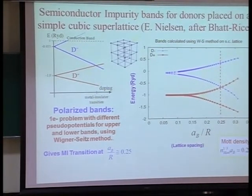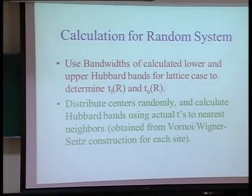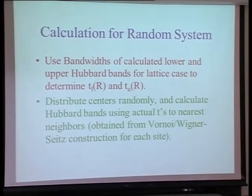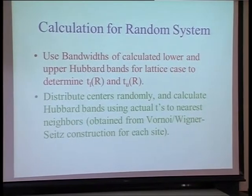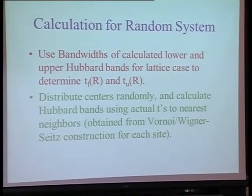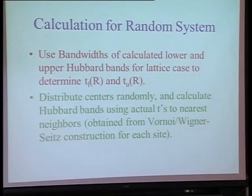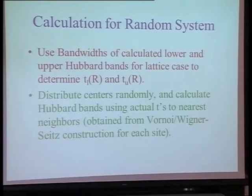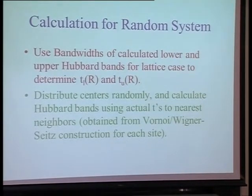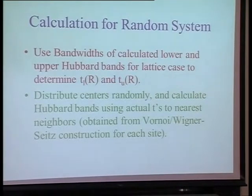So the next thing that he did was use the bandwidths of the calculated lower and upper Hubbard band for the lattice case to determine the hopping parameter for the lower Hubbard band and the hopping parameter for the upper Hubbard band. Then distribute the centers randomly and calculate the Hubbard bands using actual T's to nearest neighbors obtained from a Wigner-Seitz construction for each site.